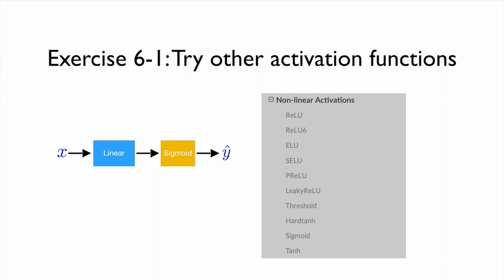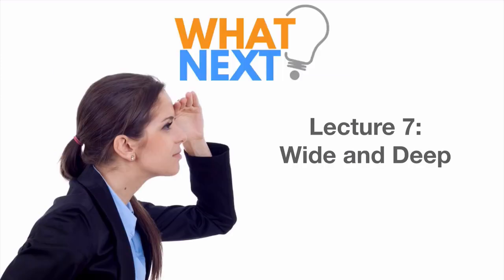In this lecture, we just use the sigmoid. Often, we call this kind of function as activation functions. And there are other types of activation functions like ReLU or tanh and so on. So you can try other activation functions for your exercise. In our next lecture, we're going to talk about how we can make this logistic regression or neural nets with wide and deep.